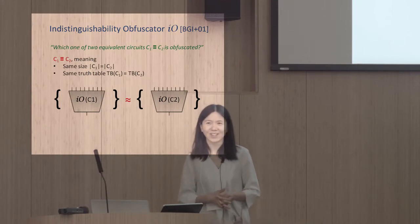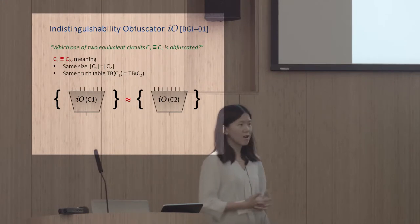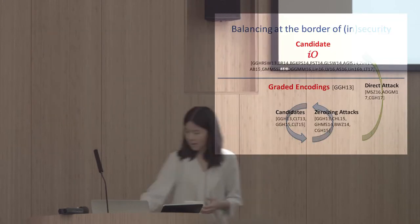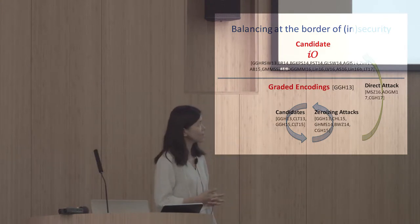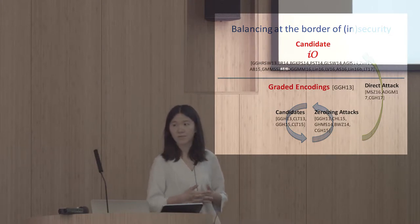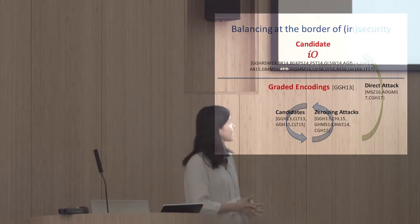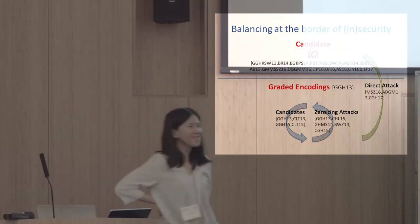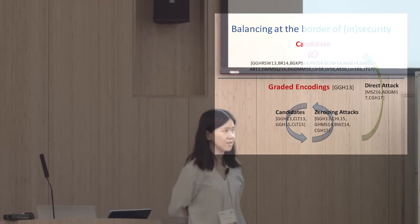However, all those constructions share the common denominator that they are based on the same framework of algebraic structure, which we call graded encodings. So far, there have been several candidate graded encodings proposed. But unfortunately, all of them were shown vulnerable to different kinds of attacks. Furthermore, cryptanalysis has advanced to the point that we can carry over some of those attacks, and we even have direct attacks on IO constructions when instantiated with specific graded encoding schemes.